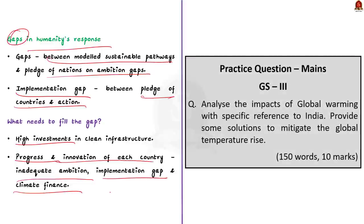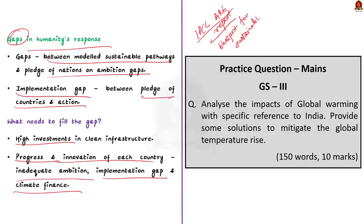To conclude, the IPCC AR6 synthesis report is a landmark document. It offers a blueprint for sustainable development by presenting data of present and future damages to ecosystems. Therefore, it is now up to the governments and people of the world to act on the climate risk.